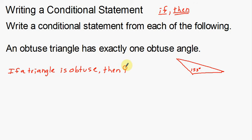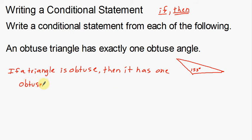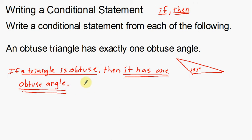Then — the 'it' part is referring to the triangle. I don't have to repeat 'the triangle' again; I can just say 'then it' because I've already stated what my subject is. Then it has one obtuse angle. So: if a triangle is obtuse, then it has one obtuse angle. The hypothesis is the if part, and the conclusion is the then part.